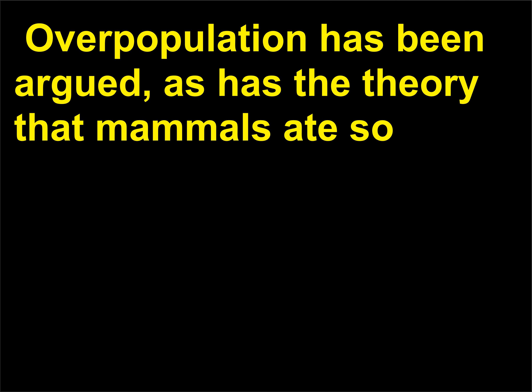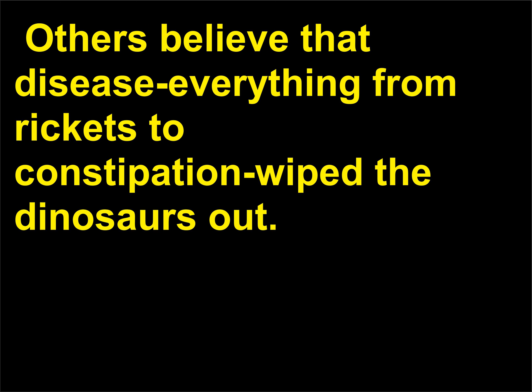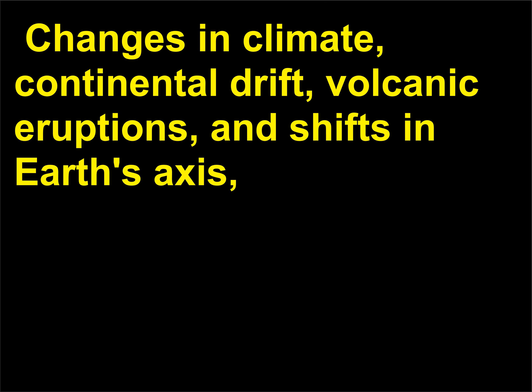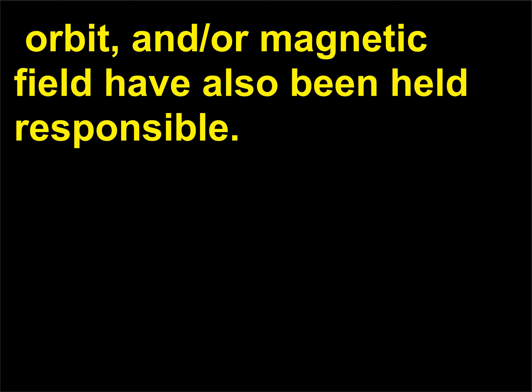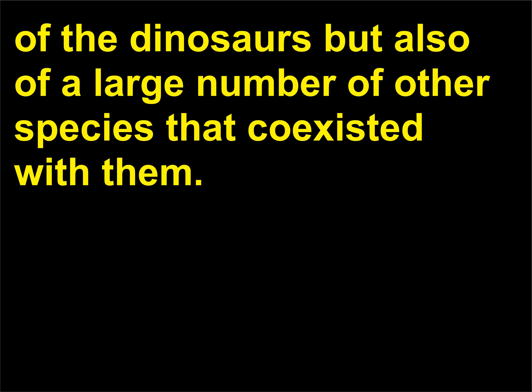Overpopulation has been argued, as has the theory that mammals ate so many dinosaur eggs that dinosaur reproduction was irrevocably harmed. Others believe that disease — everything from rickets to constipation — wiped the dinosaurs out. Changes in climate, continental drift, volcanic eruptions, and shifts in earth's axis, orbit, and/or magnetic field have also been held responsible. The catastrophists argue that a single disastrous event caused the extinction not only of the dinosaurs but also of a large number of other species that coexisted with them.